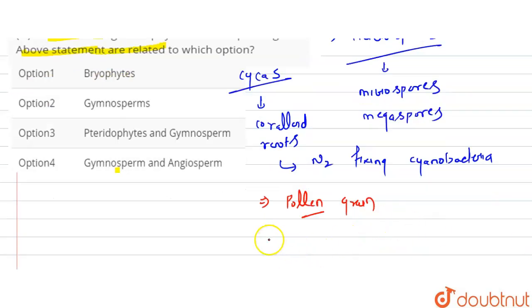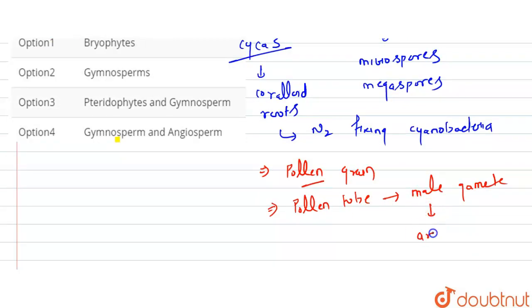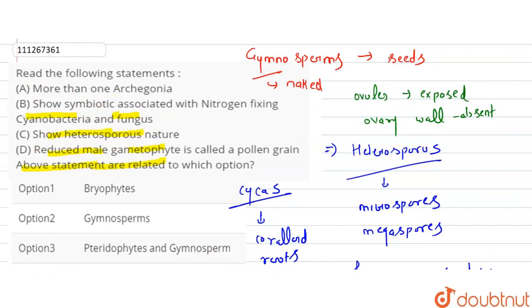Pollen grain will represent the male gamete, and the male gamete will come through pollen tube. So pollen tube will take the male gamete towards archegonia. Now archegonia is our female reproductive organ which will be present in the ovules. So we have given more than one archegonia. So here we will get into gymnosperms, which will have nitrogen fixation, the heterosporous nature, and the reduced male gamete.